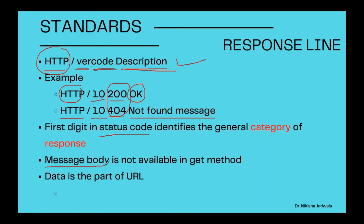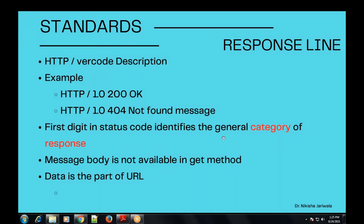The message body is optional. More precisely, when we use GET method, the message body will not be available there. And if the user needs some data, then that data will also be part of the URL. These are the important things to consider related to the response line that we receive against a request.